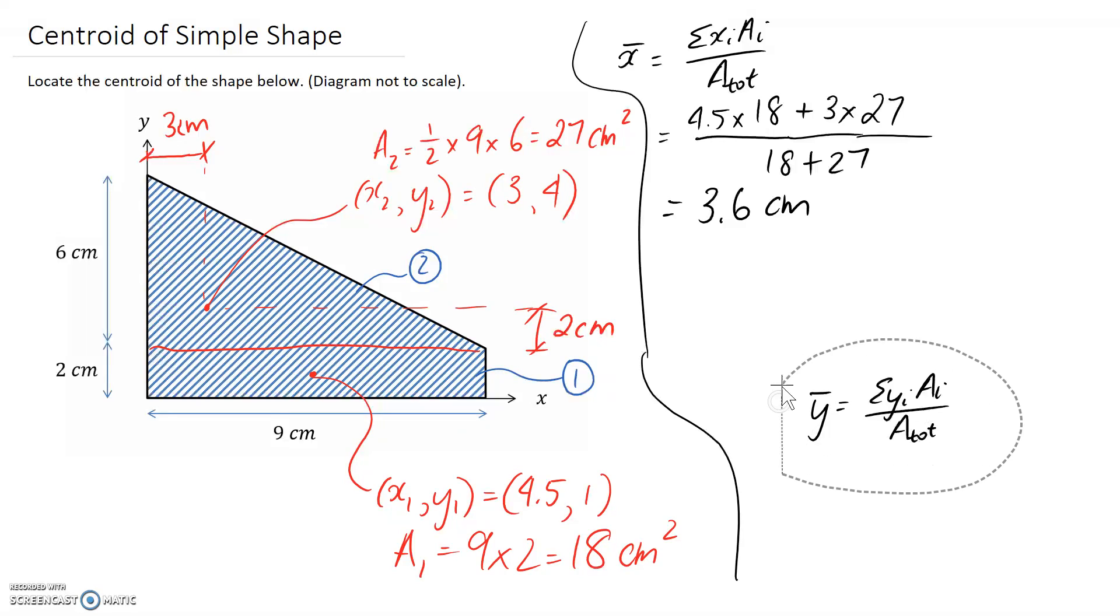Now we just need to work on the y-coordinate. Same principle, we have two different shapes, so that means we're going to need two different things that go in this sum. We'll start with y1, which worked out to be 1, multiplied by a1, which came to be 18.